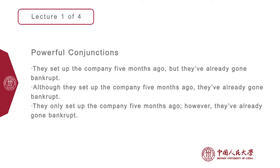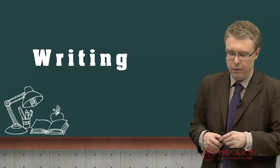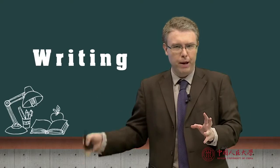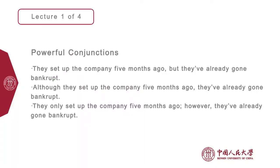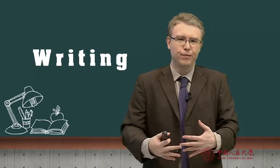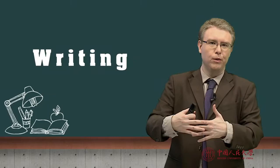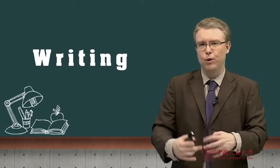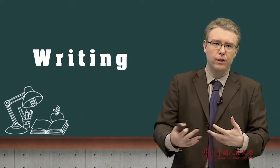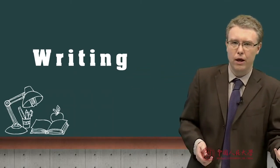You can use conjunctions in very powerful ways within emails. For example: 'They set up the company five months ago, but they've already gone bankrupt.' Or: 'Although they set up the company five years ago, they've already gone bankrupt.' Or: 'They only set up the company five months ago; however, they've already gone bankrupt.' Each uses conjunctions in different ways. The simpler sentence using 'but' is more accessible and probably more informal, while the semi-colon with 'however' gives a more professional tone to the writing.